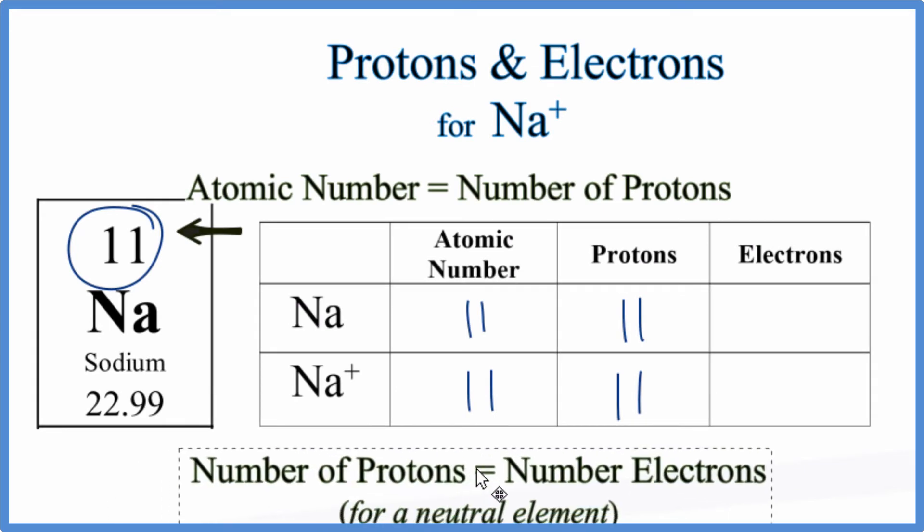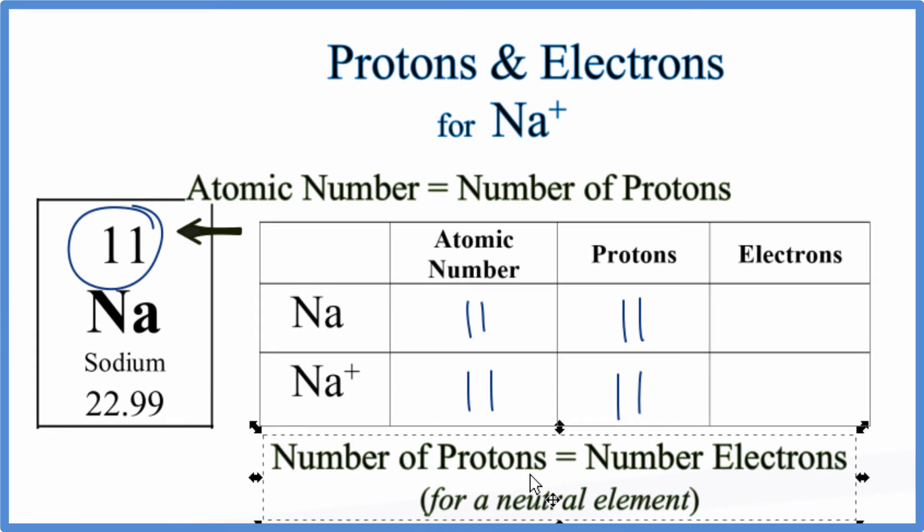We find the electrons by looking at the atomic number again. The number of protons equals the number of electrons. So for sodium, we have 11 protons, we have 11 electrons.